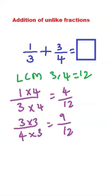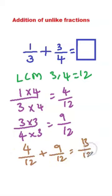Now we got here common denominator. So we can add 4 by 12 plus 9 by 12 equal to 13 by 12. So the answer is 13 by 12.